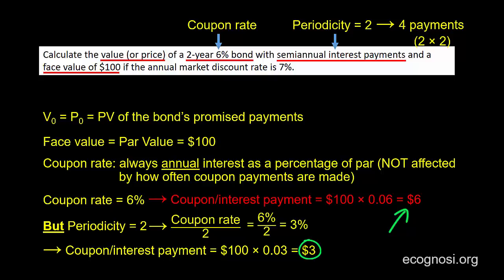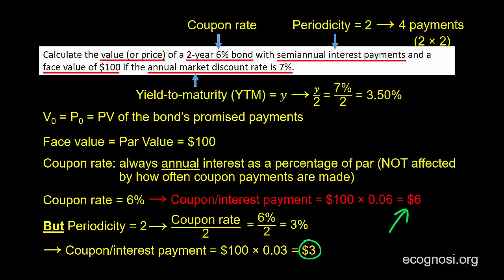Let's now move on to the last bit of important information. The annual market discount rate is 7%, and this is what we called the yield to maturity, or YTM, denoted with Y in the previous video. But this is an annual rate. Therefore, as was the case with the coupon rate, we need to divide it by the periodicity in order to get the appropriate rate to use when we discount our cash flows to present value terms. And as you can see, 7% over 2 gives us 3.5%. Now we have everything we need to calculate the value of this bond.